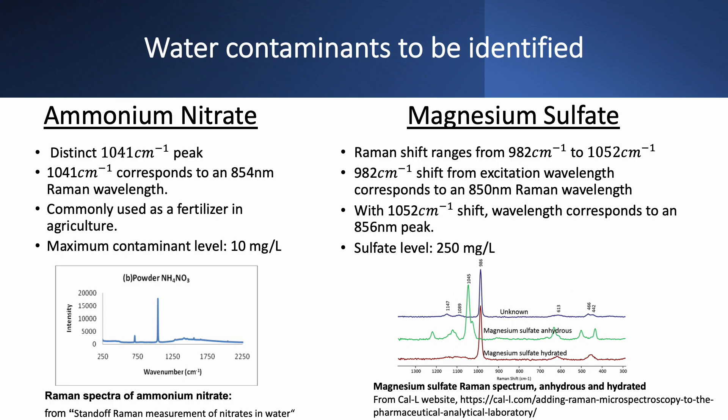Magnesium sulfate occurs naturally and is found in groundwater or can be used as an additive for food. Though it is not federally enforced, the EPA does have a maximum contaminant level recommendation of 250 milligrams per liter.